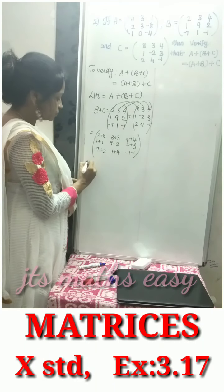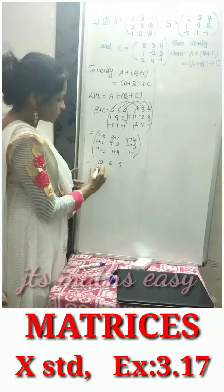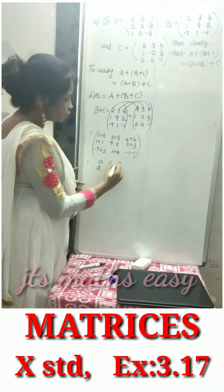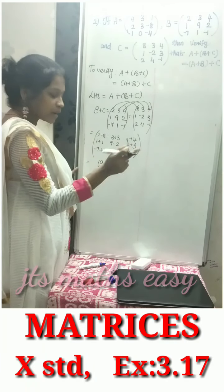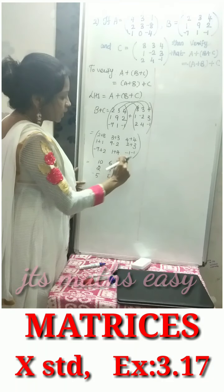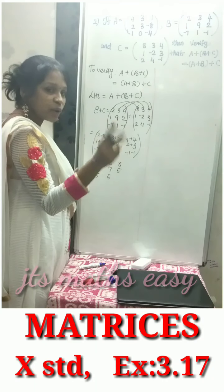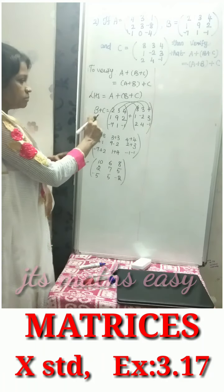The result is 2 plus 8 equals 10, 3 plus 3 equals 6, 4 plus 4 equals 8. Then 2, 9 minus 2 equals 7, 5. Minus 7 plus 2, we subtract to get minus 5, 5. Both are minus symbols, so minus 2. This is B plus C.